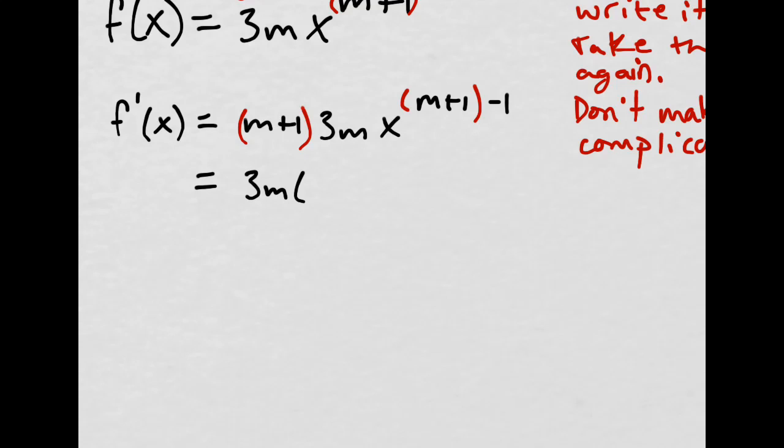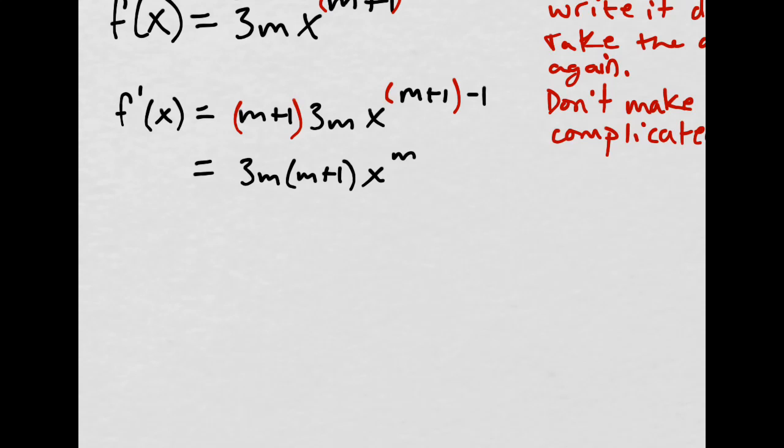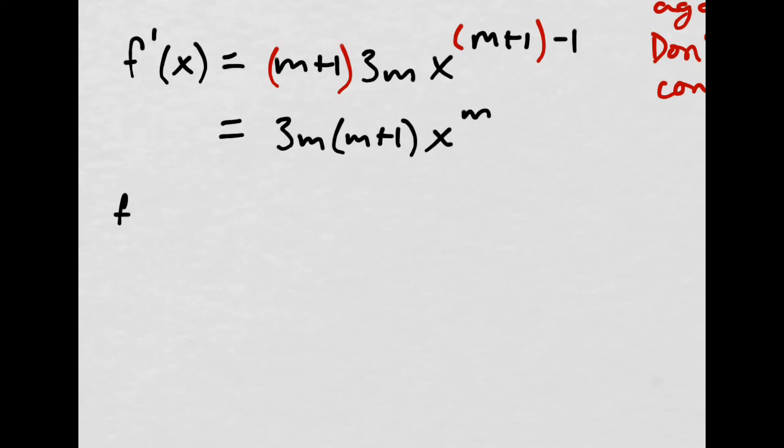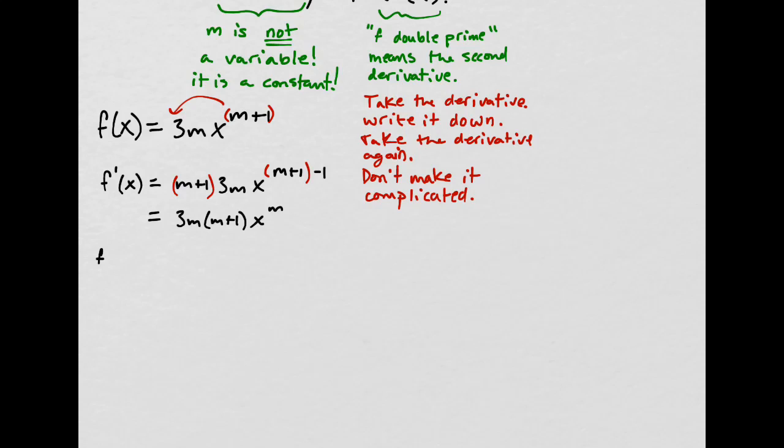I have f prime of x equals m plus 1. And then I have the 3m, and then the x, and then I just take this and subtract 1. That's the rule. Take the exponent, bring it down out in front, and then subtract 1 from that exponent. Let me simplify a little bit.